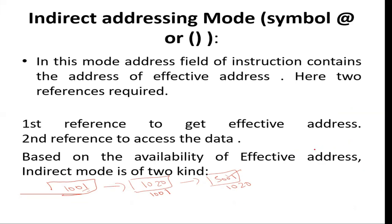Next is indirect addressing mode — memory indirect. Unlike register indirect addressing mode where we got the effective address from a register, here we have two memory references to fetch the data. For example, we first get memory address 1001. We go to location 1001 and get another memory address: 1020. That 1020 is the effective address, and at location 1020 we get our data.